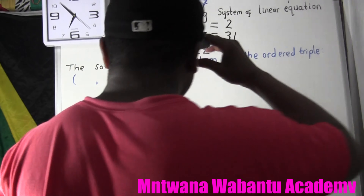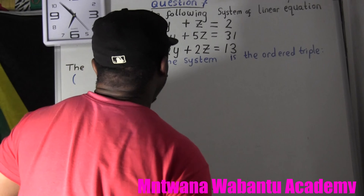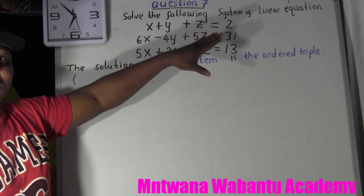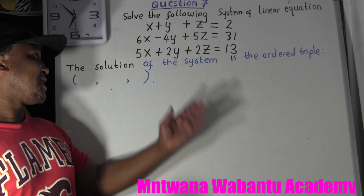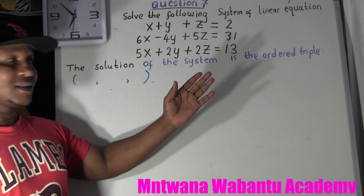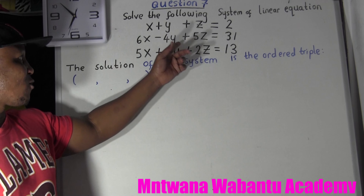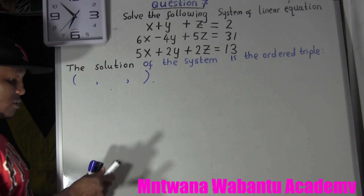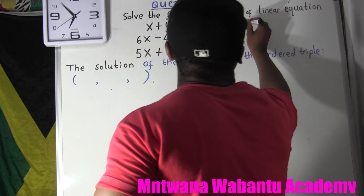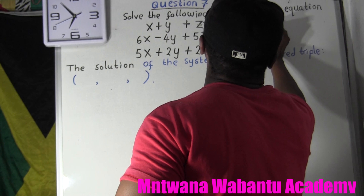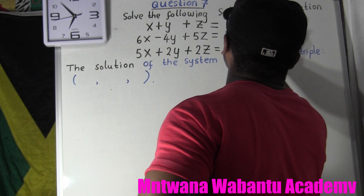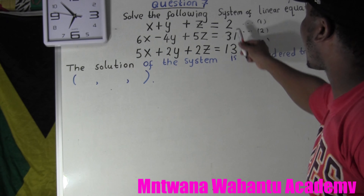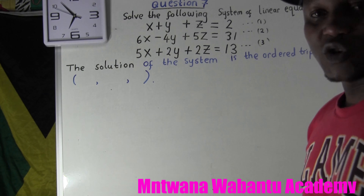We have a question here. We're going to solve a 3x3 system of equations with variables x, y, z. I'm going to call this the first equation, this one the second equation, and this one the third equation.